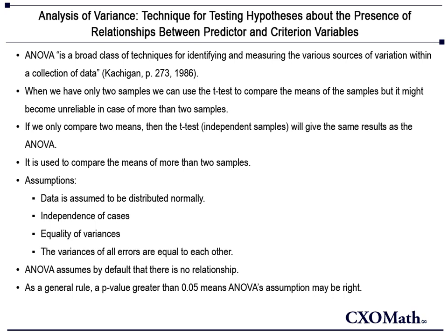When we have only two samples, we can use the t-test to compare the means of the samples, but it might become unreliable in case of more than two samples. If we only compare two means, then the t-test will give the same results as the ANOVA test. ANOVA is used to compare the means of more than two samples.